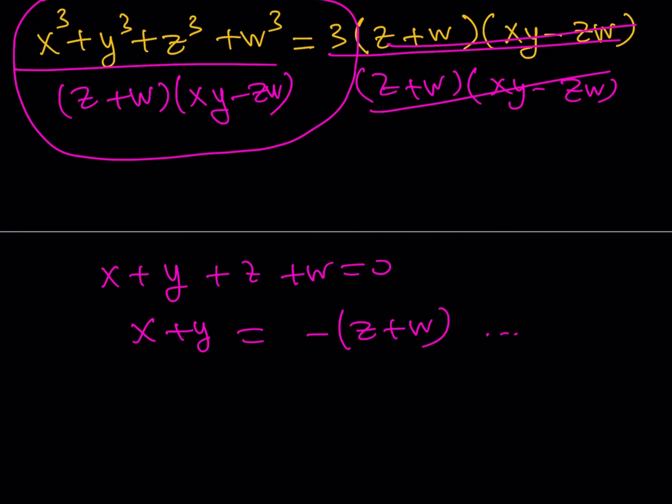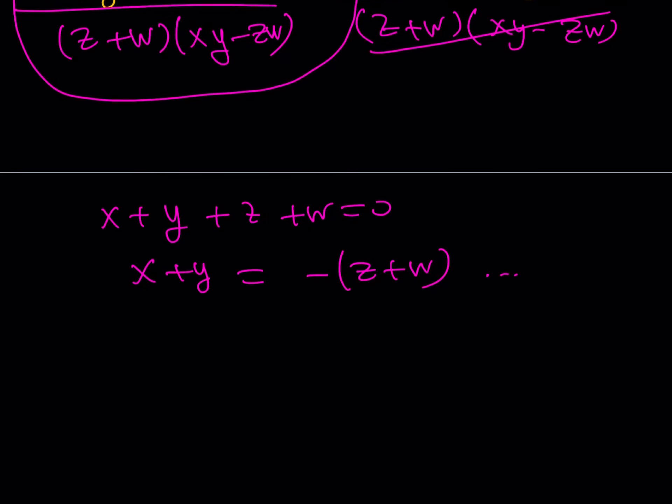The third method is actually one of my favorites because it involves substitution. Here's one fact you need to remember. The answer does not depend on individual values of x, y, z, w. It only depends on the fact that their sum is zero. So if I can find four numbers that add up to zero. Suppose x equals one, y equals one, z equals one, and w equals negative three. Their sum is zero.